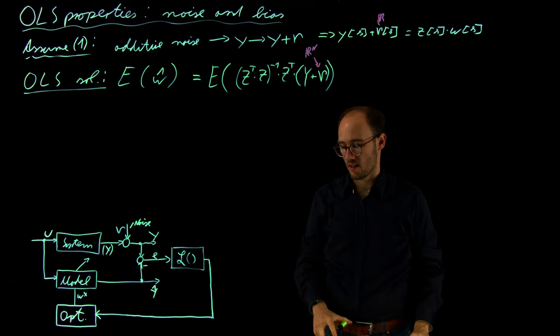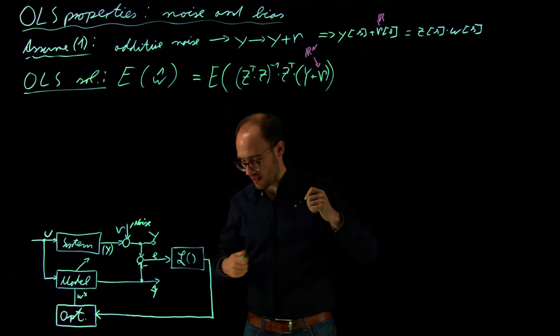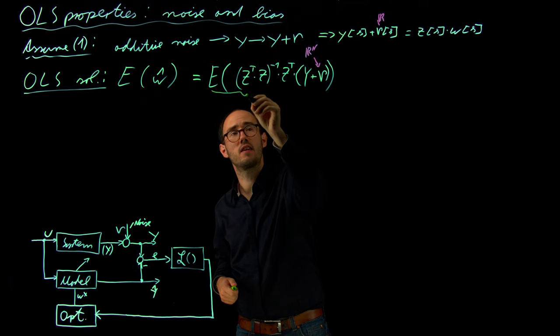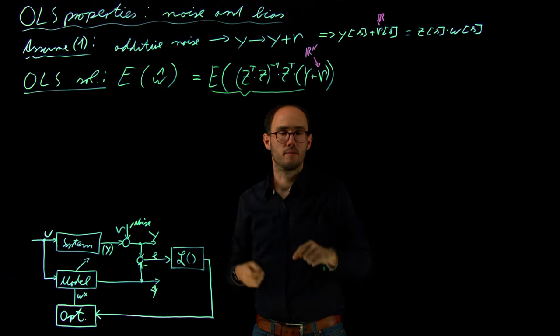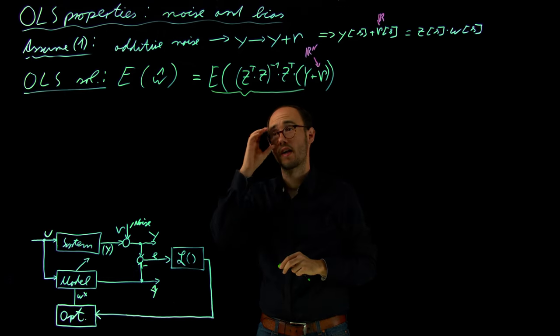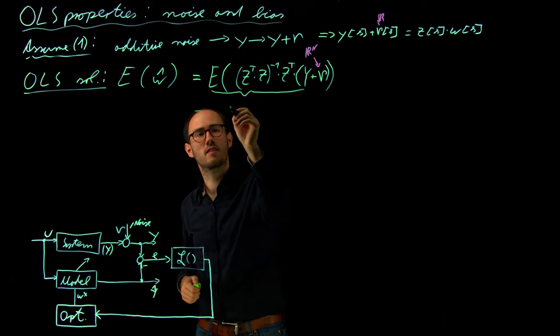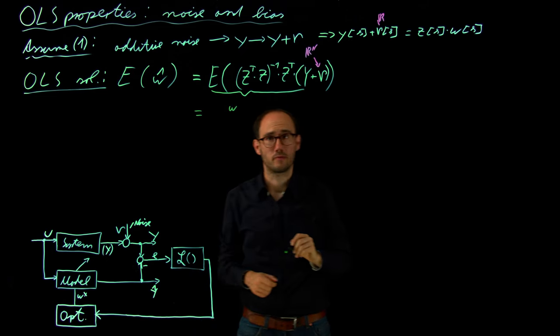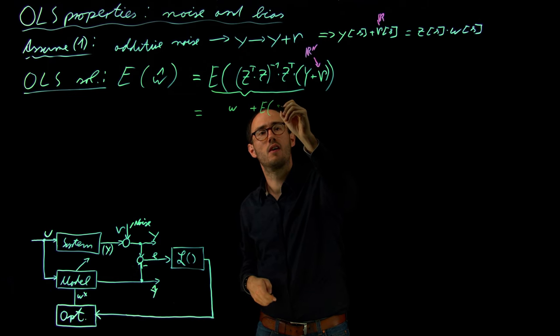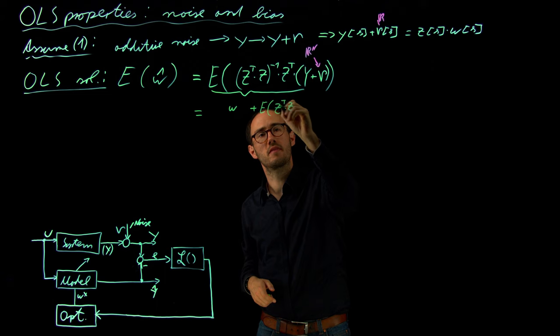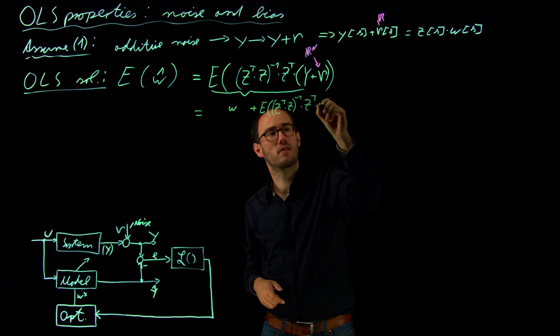If we have a look at this equation so far, then we can basically identify that this part here, this expectation of this part is basically just the standard solution of the OLS, which we had previously. So the expectation over the standard solution, which we had previously, is basically just our W.